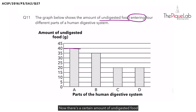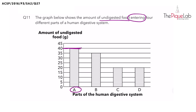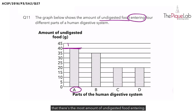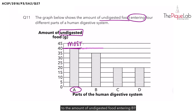Now there's a certain amount of undigested food entering part A, and in fact this is where you can see that there's the most amount of undigested food entering. Now if you look at B, what has happened to the amount of undigested food entering B? Yes, it becomes less.